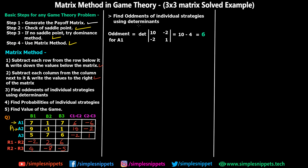For the oddment of A1, we eliminate the first row of the column difference values and take the remaining four values: 10, −2, −2, and 1. We calculate the determinant as (10 × 1) minus (−2 × −2), which gives 10 minus 4 equals 6. Since we use the absolute value (mod), any negative result is made positive. So the oddment for A1 is 6.